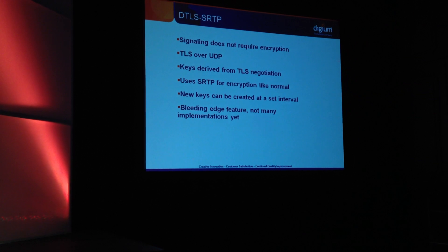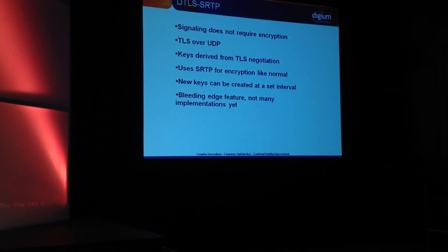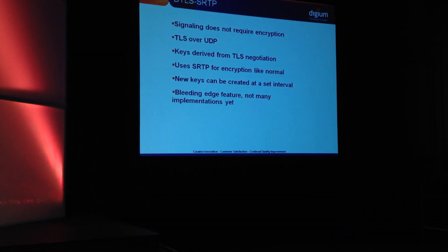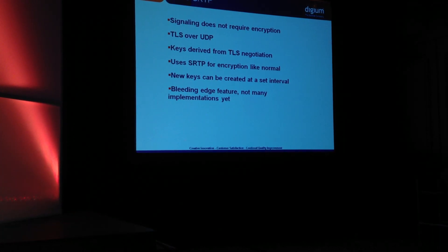DTLS-SRTP — who knows what that is? DTLS-SRTP is one of the mechanisms you can use for doing encryption between two devices. Instead of sending key information over the signaling — so in SIP that would be in the SDP — it actually uses TLS over UDP. Once that negotiation is complete, it takes some secret bits out of it and uses that as keying information for SRTP. In the end it's still using SRTP underneath; it's just a different way to get the keying information.